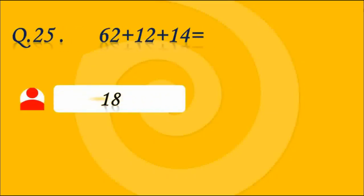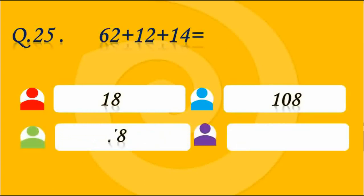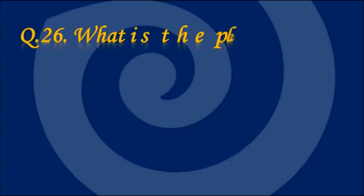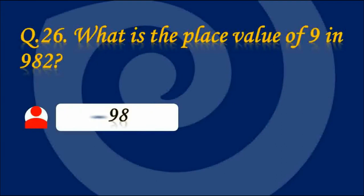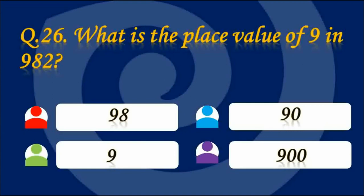Question number 25. 62 plus 12 plus 14 is equal to what? Answer D — 88. Question number 26. What is the place value of 9 in 982? Answer D — 900. The right answer is 900.